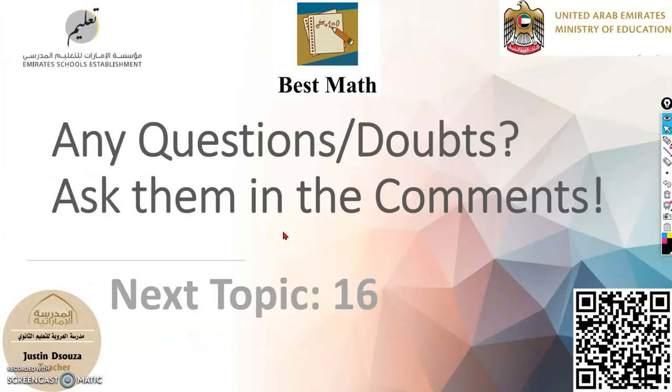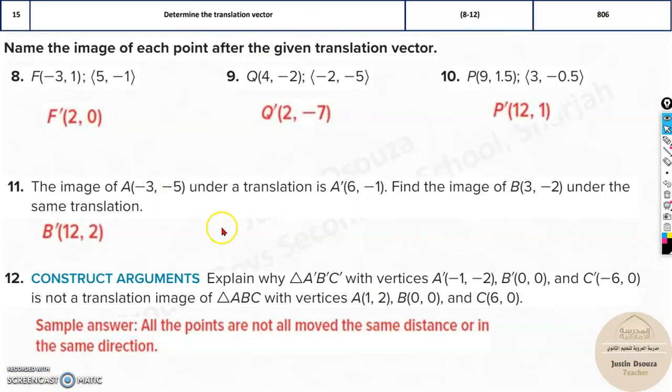That is basically how we solve topic number 15. Just remember the translation vector. If it's not given, solve it by subtracting the original point from the translated point. You'll get the translation vector and then just check for the answer.